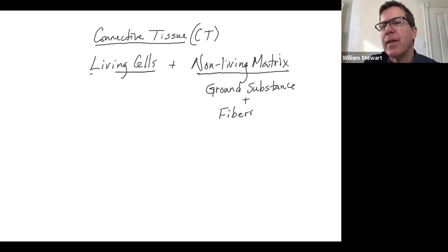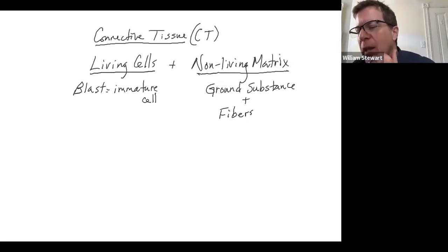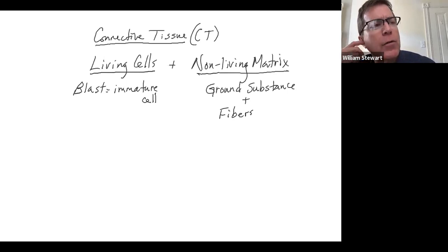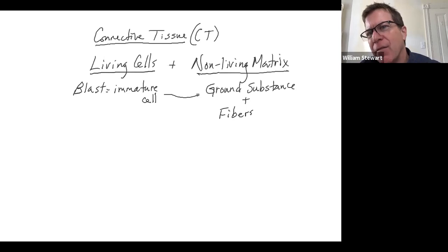The living cells work like this. The blast form of a cell — B-L-A-S-T — means an immature cell; it's usually a suffix. For example, a chondroblast is an immature cartilage cell, an osteoblast is an immature bone cell, and a fibroblast is an immature cell that secretes fibers. Whenever you see the suffix 'blast,' it refers to an immature cell, and the blast form typically secretes these non-living matrix components.